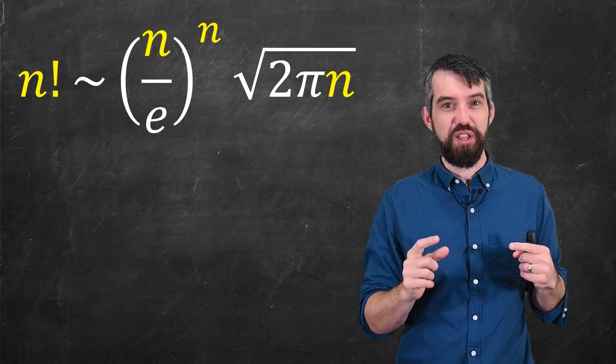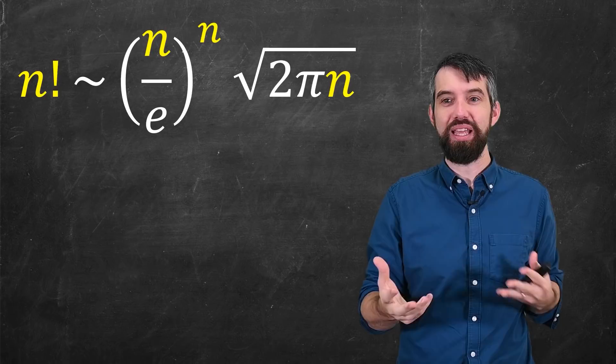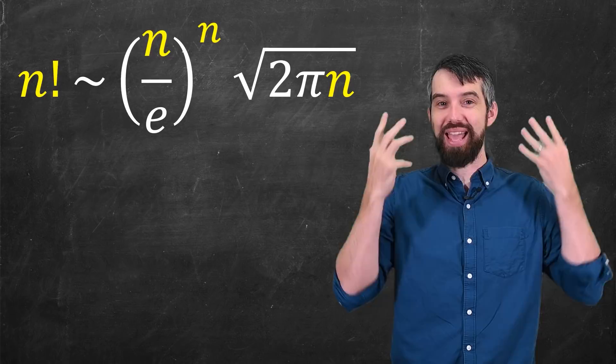In this video, we're going to explore Stirling's formula, which is this crazy relationship between factorials and n divided by e to the power of n square root of 2πn, a mouthful.